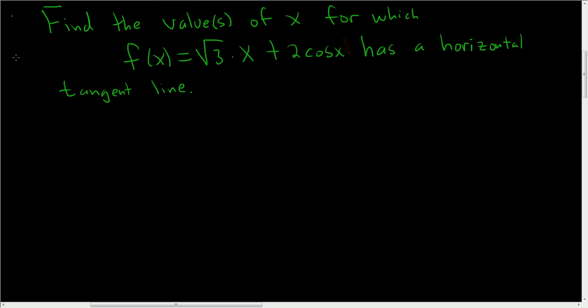Okay, we're being asked to find the values of x for which this function has a horizontal tangent line. I forgot to write something, so I'll write it in 0 to 2π. So that's going to be our interval. Alright, solution.